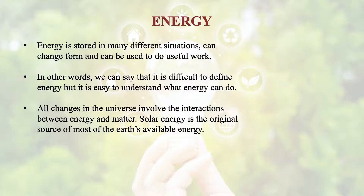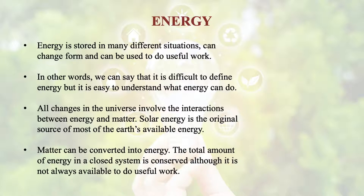All the changes in the universe involve the interaction between energy and matter. Whether it is solar energy, it is the original source of most of the earth's available energy, and we are going to convert this energy. Matter can be converted into energy. The total amount of energy in a closed system is conserved, although it is not always available to do useful work. Sometimes we can convert it into useful work, sometimes we may not. Some percentage of the energy is only converted into useful work, which is known as the available energy.